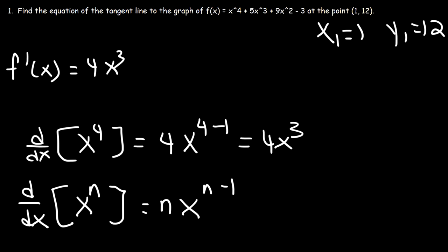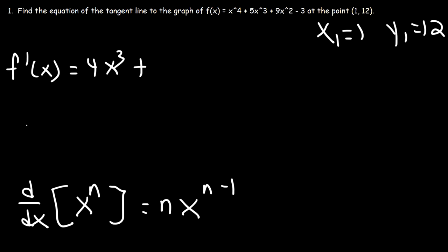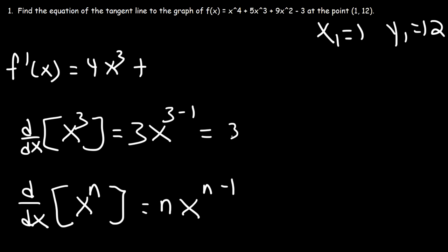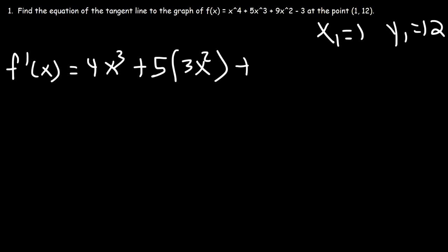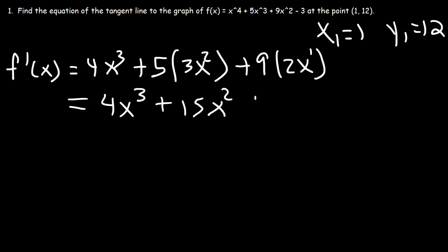Now let's apply that same process to the remaining terms. The derivative of x cubed is 3x squared, and multiplying by 5 using the constant multiple rule gives 15x squared. The derivative of x squared is 2x, and 9 times 2 is 18. The derivative of a constant is always 0, so the first derivative of the function is 4x cubed plus 15x squared plus 18x.